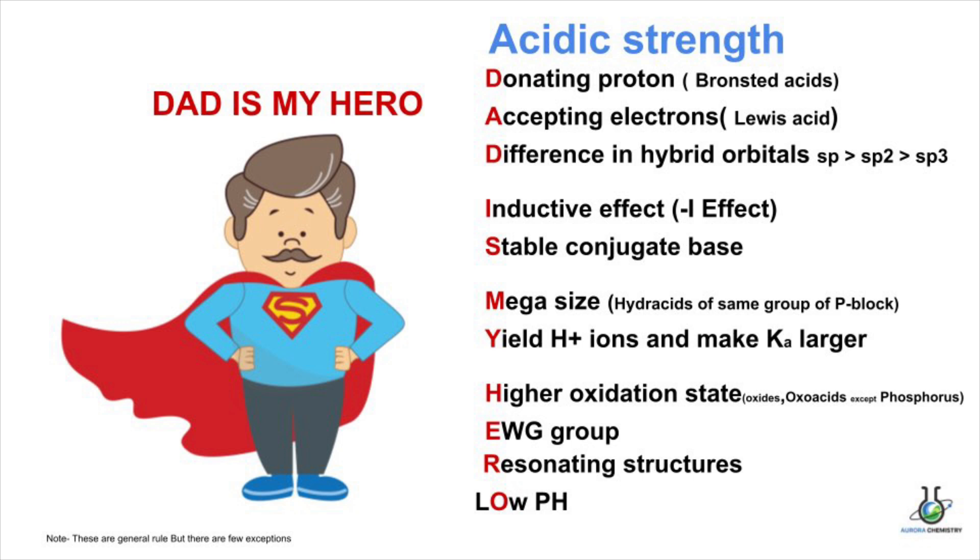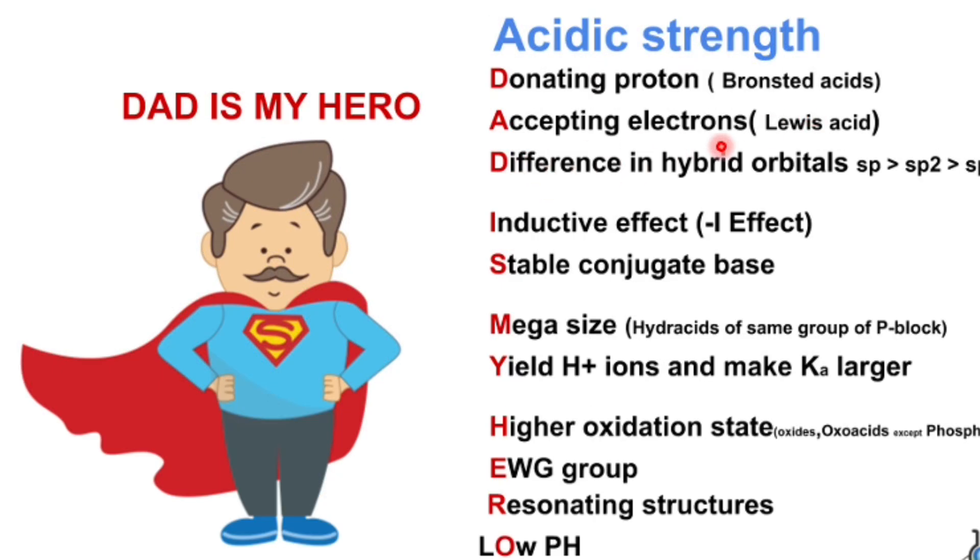Here each letter represents the conditions required for acidic nature for the compounds. The first one D stands for donating proton, that is called Bronsted acid. A is accepting electron, called Lewis acid.